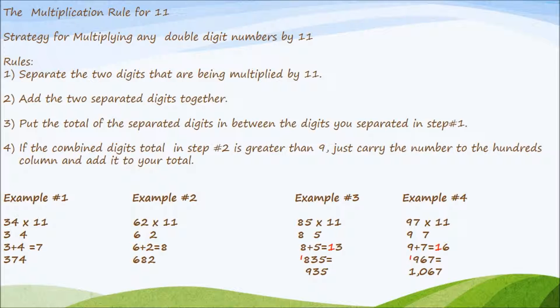Example 3. We have 85 times 11. We're going to separate the 8 and the 5. We have 8 plus 5 which is equal to 13. We're going to place the 3 in between the 8 and the 5. We're going to carry that 1 over to the hundreds column. So we have 8 plus that 1 which is equal to 9. Final answer 935.